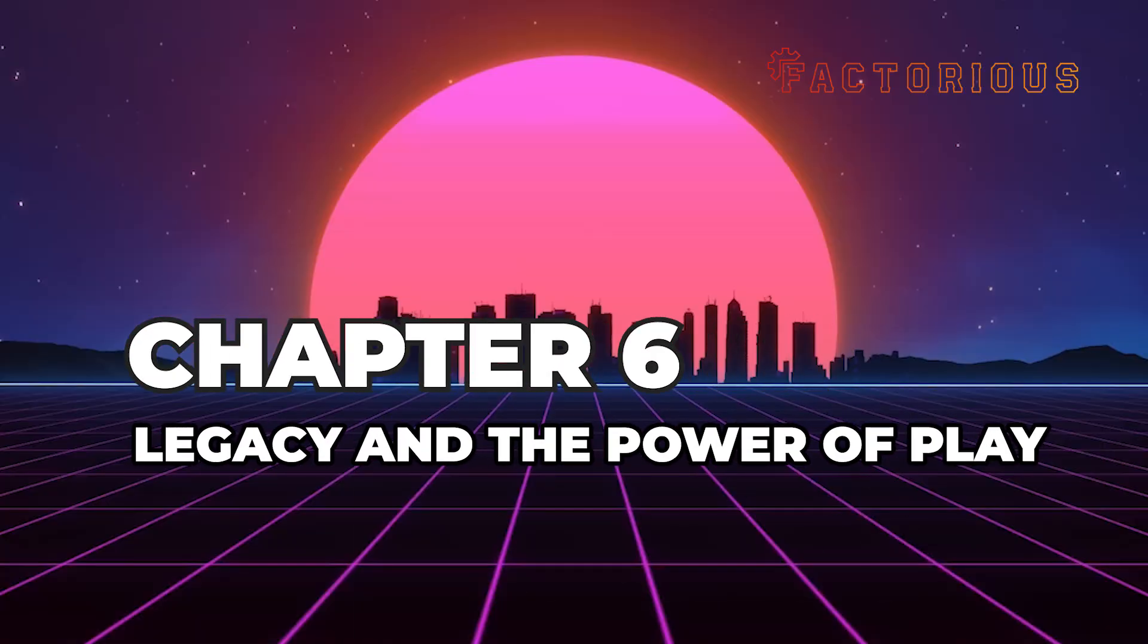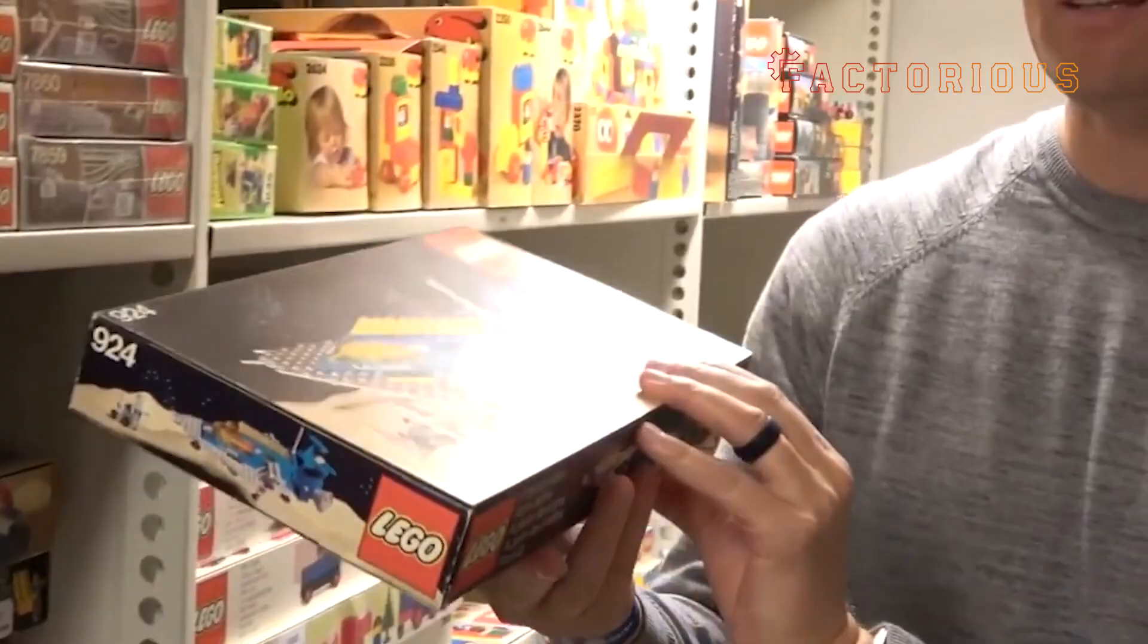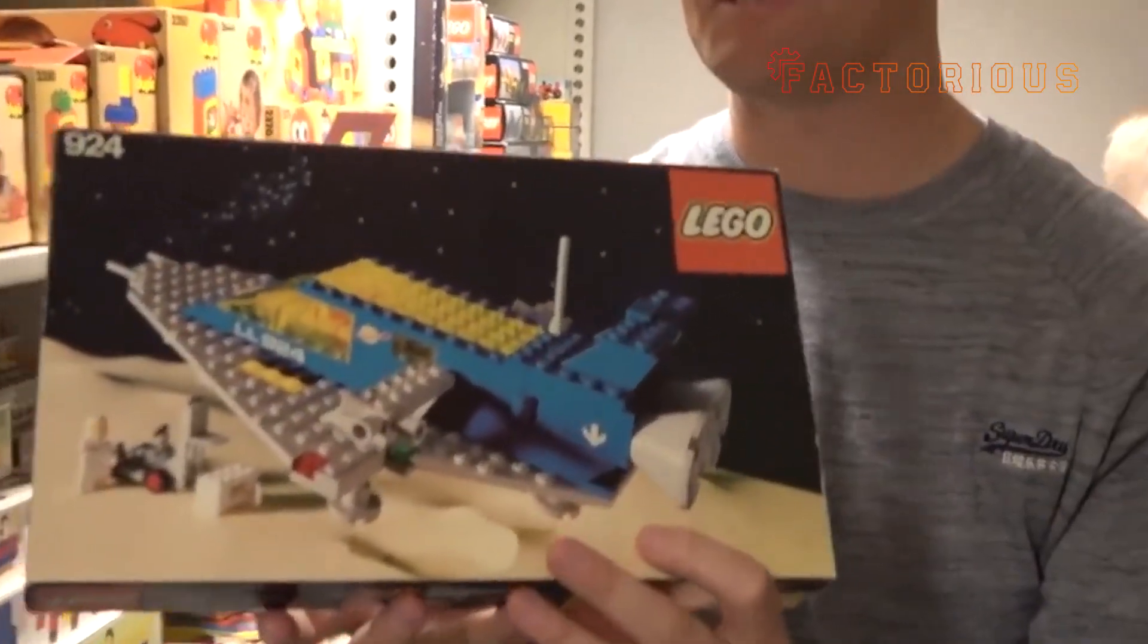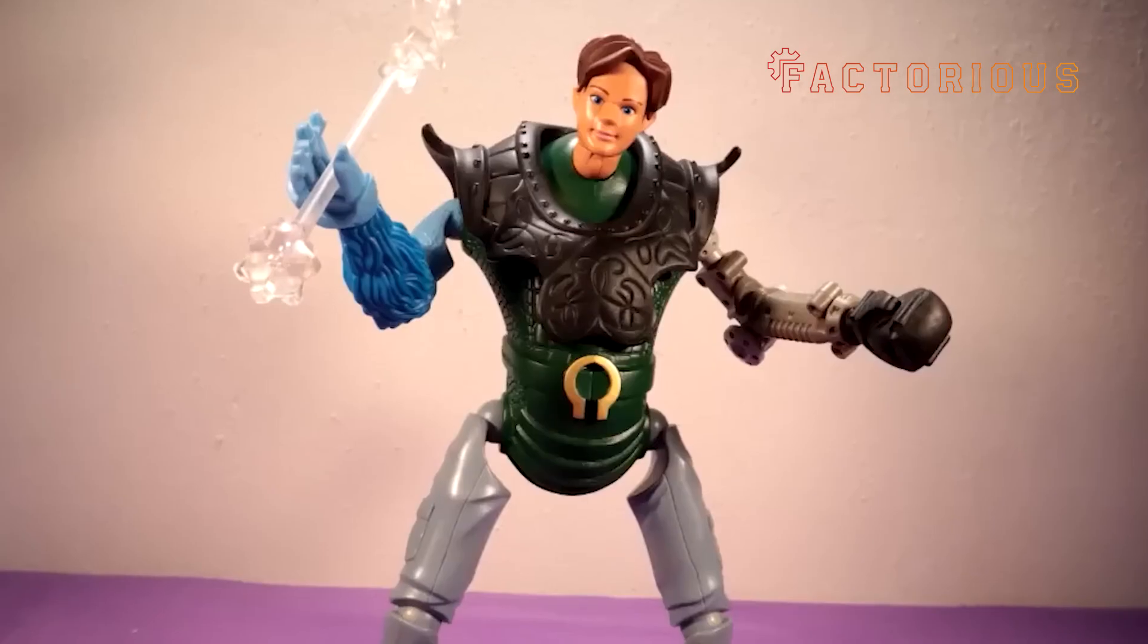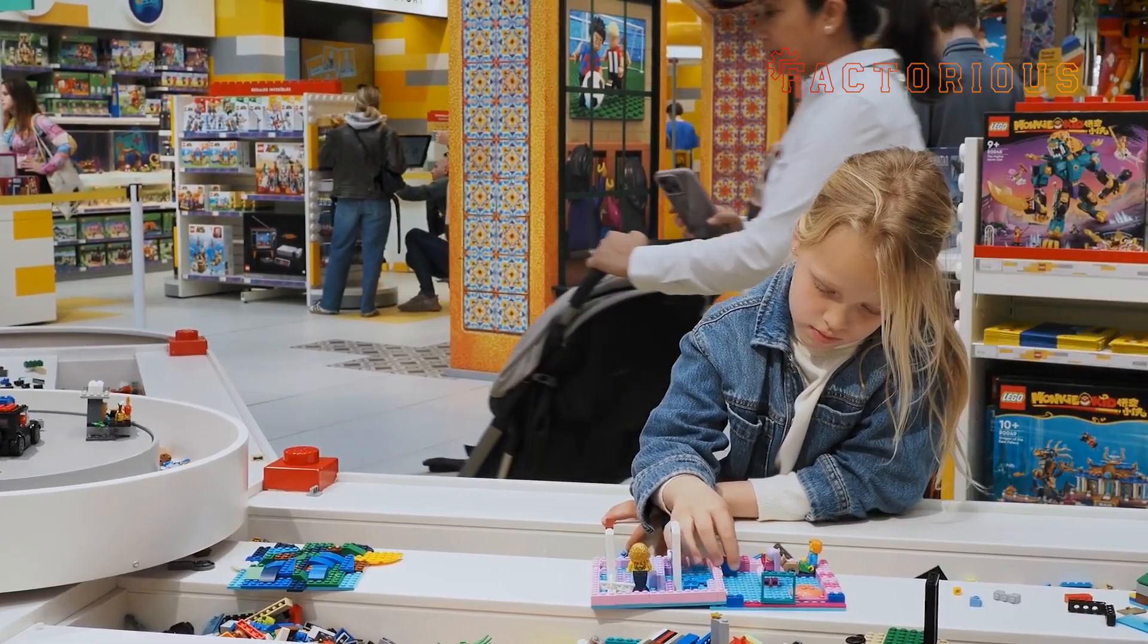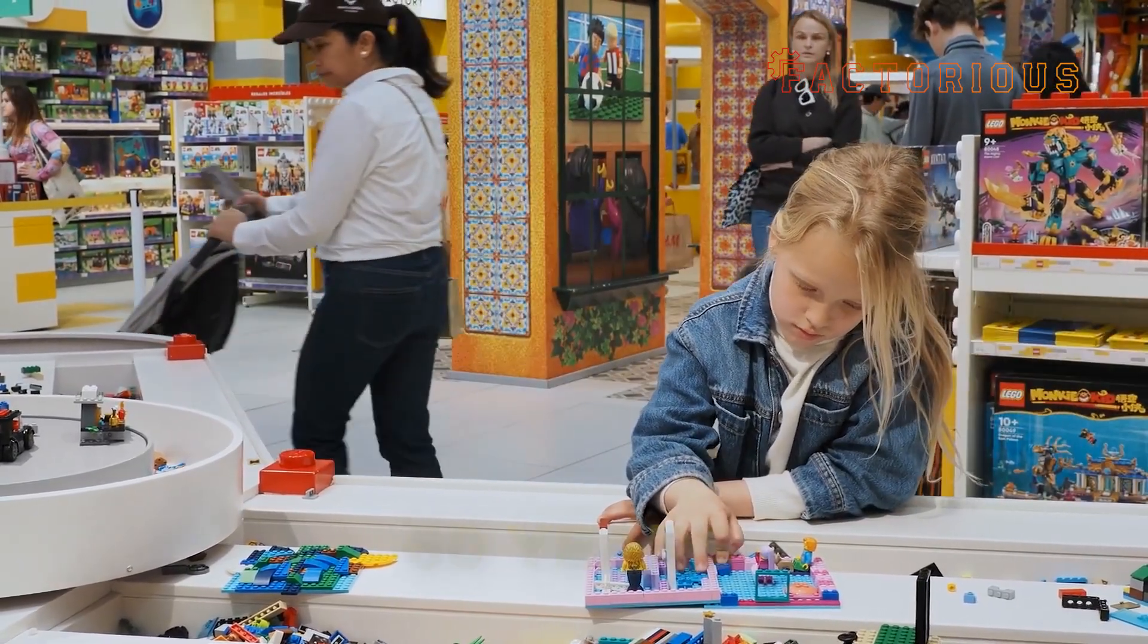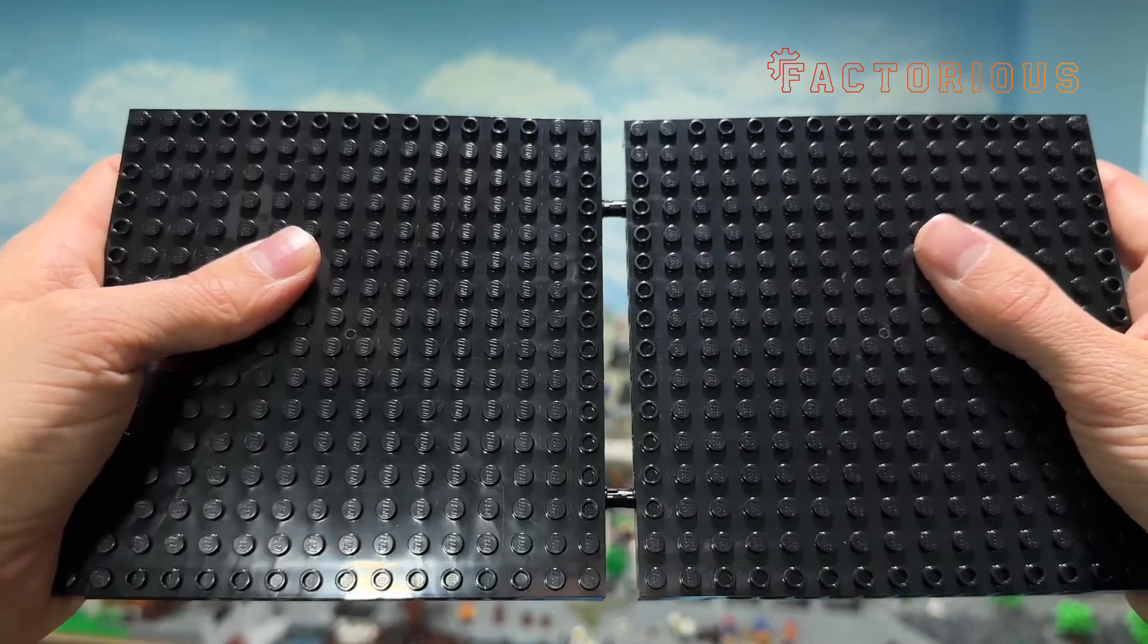Chapter 6. Legacy and the Power of Play. Let's take a step back, because beyond the plastics, Lego is something else entirely. It's one of the few toys that transcends generations. Grandparents, parents, and kids can all connect through the same little bricks. There aren't many things in life that stay perfectly compatible for over 60 years. But Lego managed it. And that's not an accident.